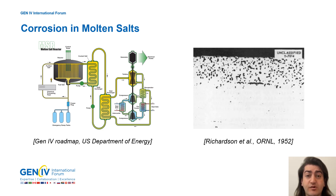Chromium at the surface oxidizes, and at higher temperatures chromium migrates from the interior to the surface and corrosion continues, leaving behind vacancies which coalesce and form subsurface voids.